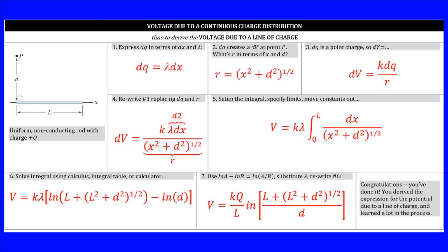Box two uses the Pythagorean theorem to capture the geometry. Box three is the differentialized version of the voltage due to a source charge at some position R away. Box four updates the expression in box three. Box five pulls out the integrals and sets the limits of integration. Box six solves that integral using calculus, an integral table, or a calculator — though using a calculator might be the riskiest approach because it doesn't allow for a lot of partial credit. And in box seven, I evaluate the solved integral.